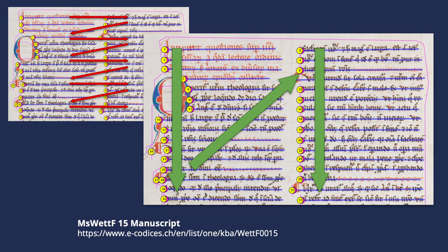Layout analysis can also include the computation of the reading order of the lines. For example, if you have a page with two columns of text, you may want to read the first line of the first column, then go to the second line of the first column. A bad reading order would move from the first line of the first column to the first line of the second column, then to the second line of the first column, then to the second line of the second column, and so on.